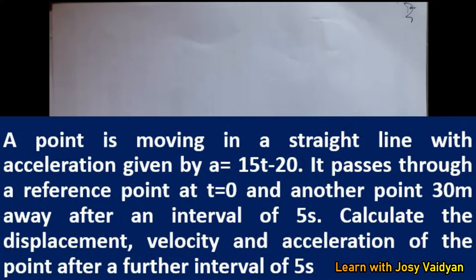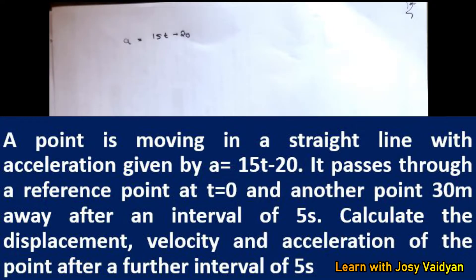A point is passing in a straight line with an acceleration given by a equal to 15t minus 20. It passes through a reference point at t equal to 0, and another point 30 meters away after an interval of 5 seconds. Calculate the displacement, velocity, and acceleration of the point after a further interval of 5 seconds.